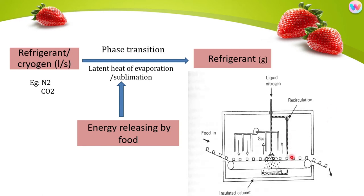Here is how to freeze the product. Food enters, then liquid nitrogen contacts the food to freeze it, and the food exits. Liquid nitrogen converts to gas form. The energy released by the food is absorbed by the liquid nitrogen, which then converts to gas. This is what happens in cryogenic freezers.